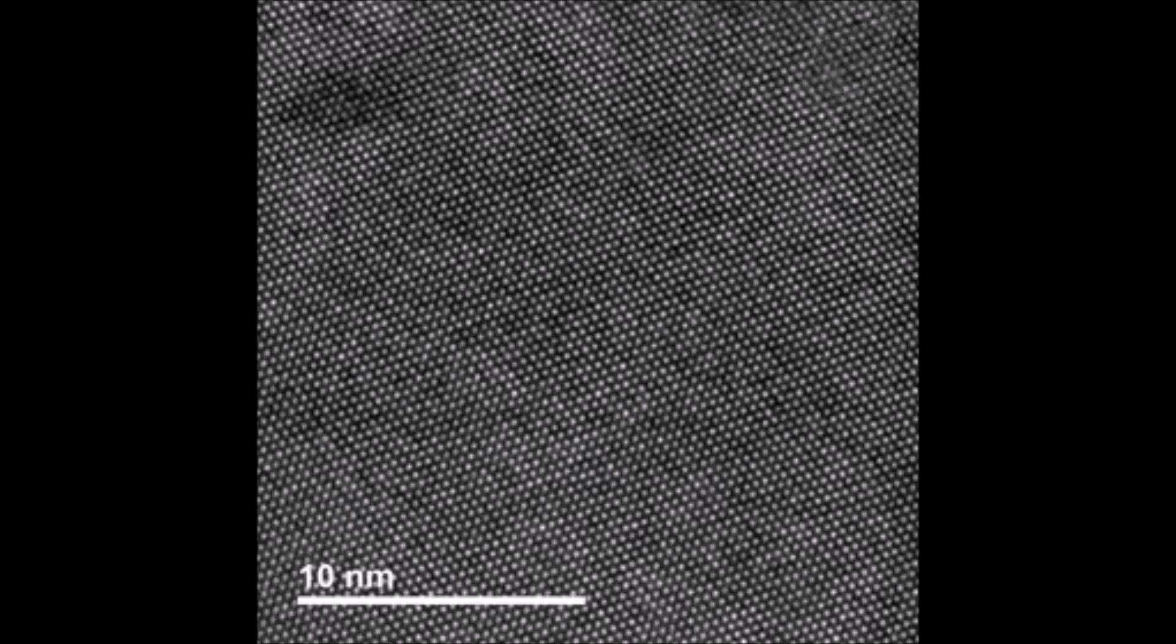So in this instance, I have a silicon sample and I'm aligned to a 110 zone axis. And I can see a lot of detail in the high resolution image because I am well aligned with the zone axis.